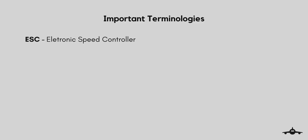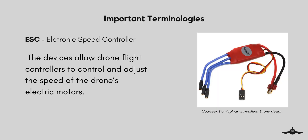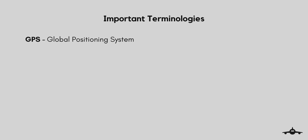Some basic terms: ESC stands for Electronic Speed Controllers. They are devices that allow drone flight controllers to control and adjust the speed of the drone's electric motors. In simple words, it is an electronic circuit that controls a motor's speed as well as its direction.